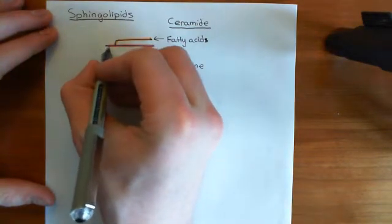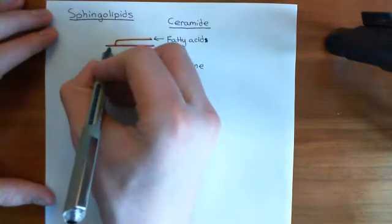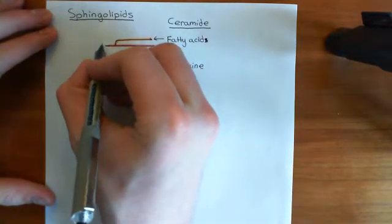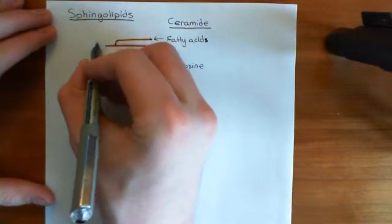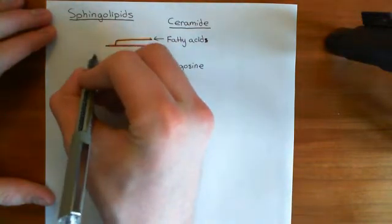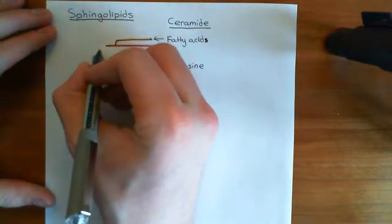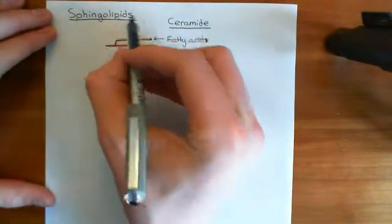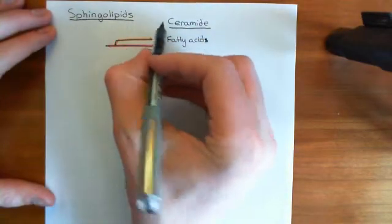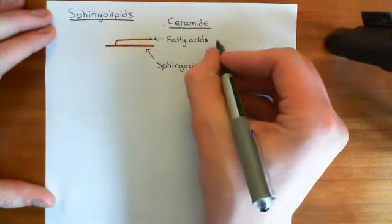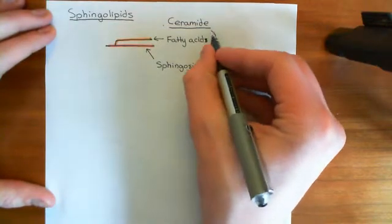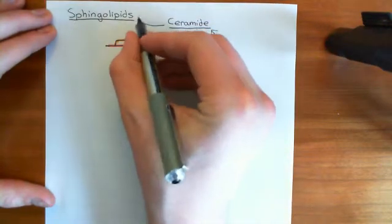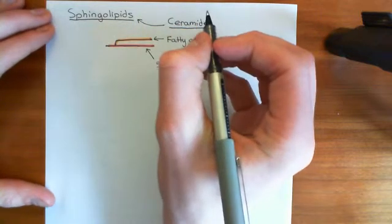The first carbon of the sphingosine molecule has an alcohol group coming off it, and this can have special additional groups added on. When you do that, you create what's known as a sphingolipid. So basically the steps go like this: you go from sphingosine to a ceramide, and then you can take a ceramide and convert it into a sphingolipid.